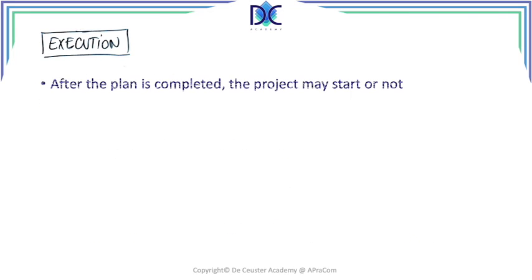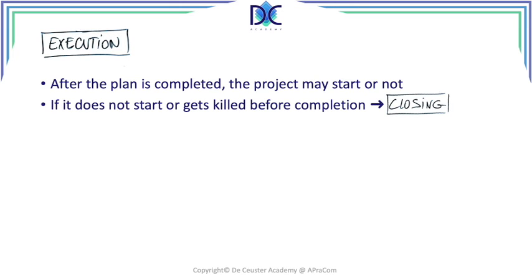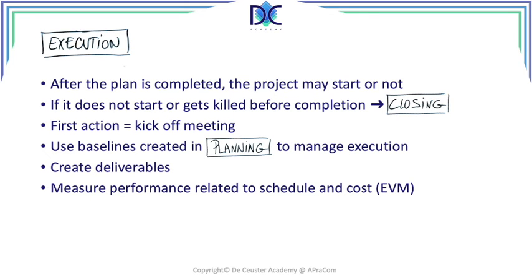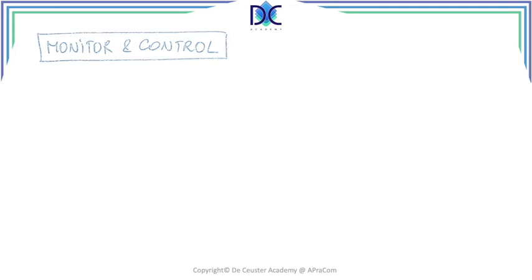Once we move to execution, we may decide not to start the project. If that happens, we immediately go to the closing step, because there is still a lot of valuable information available after planning. If we do continue, the first action is a kickoff meeting — sometimes done before planning begins, but typically once the plan is ready — to share with everybody what is going on. We then use the baselines created in planning to manage execution, using those start and finish times to begin work, create deliverables, measure schedule and cost performance, and manage changes.